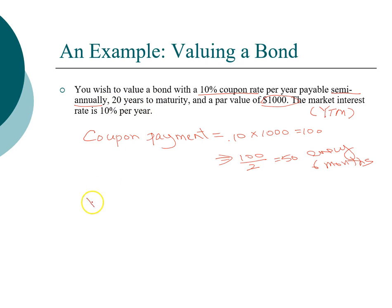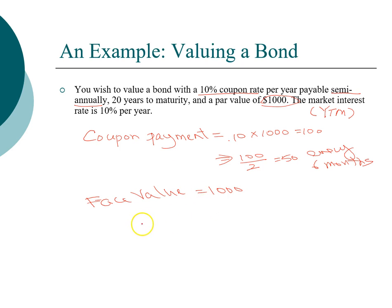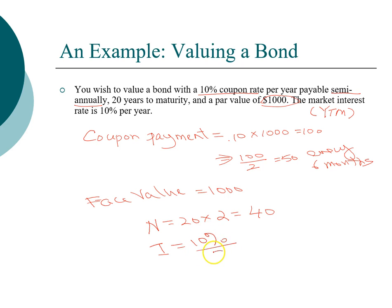The face value, or par value, is a thousand dollars. If you're doing homework and you don't see a face value given, assume it is a thousand dollars. The bond has 20 years to maturity. Because it's a semi-annual bond, the investment horizon is 40 periods — you'll receive 40 coupon payments. The interest rate is 10% yield to maturity, which is five percent every six months.